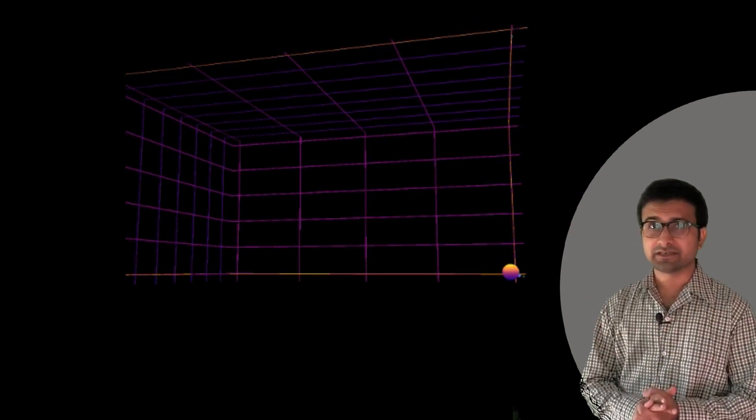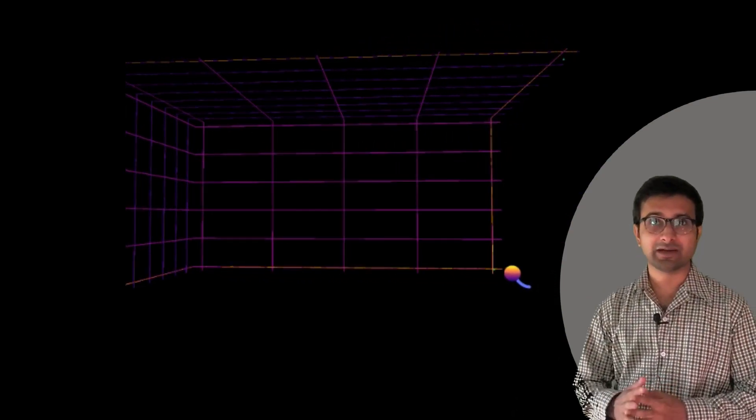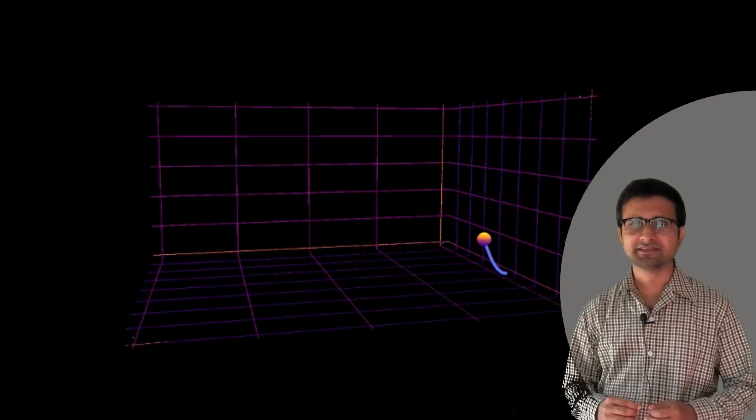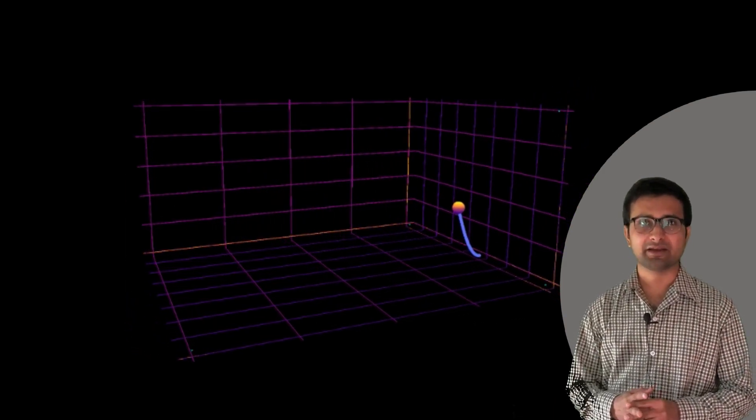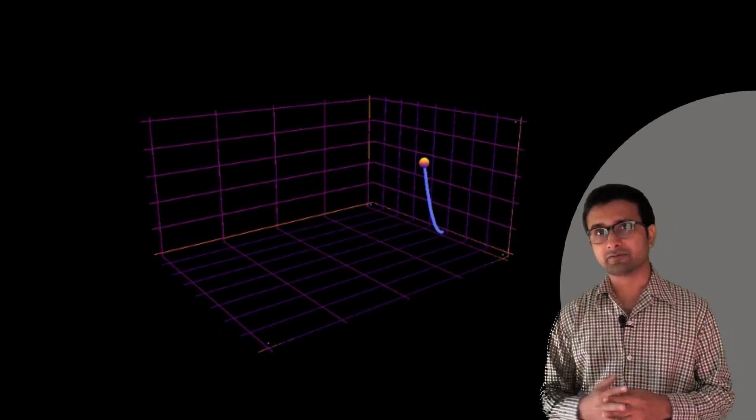This projectile motion is also made out of square functions. So let's see how y equals x squared, or a parabolic equation looks like.